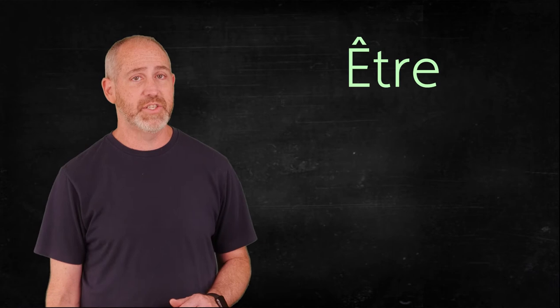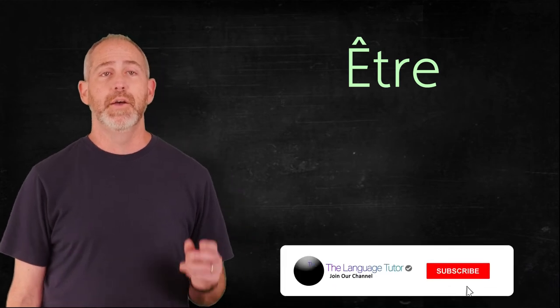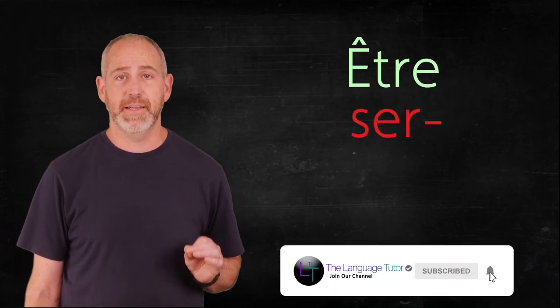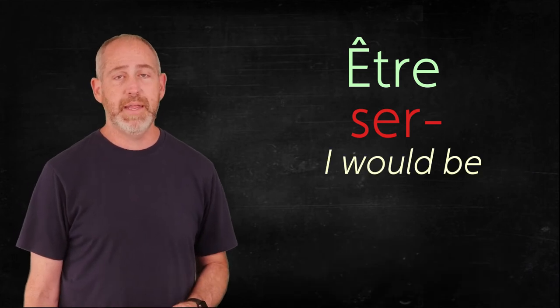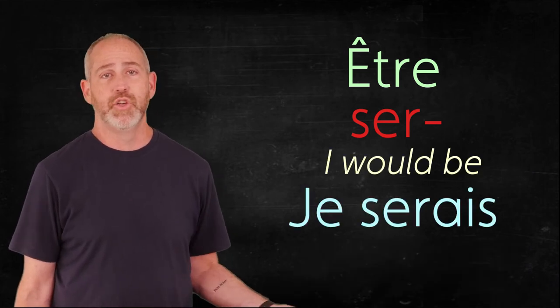Être, to be, is going to use the stem S-E-R. So I would be, would be je serais, je serais.